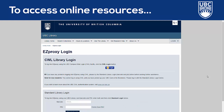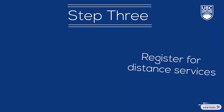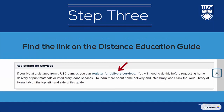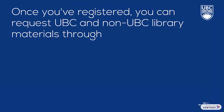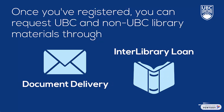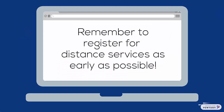Step 3: Register for Distance Services. Registering is as simple as filling out an online form, the link for which is on the Distance Education Guide under 'Getting Started.' Once you've registered for Distance Services, you'll be able to request library materials from both UBC and non-UBC libraries and have them delivered to you using document delivery or interlibrary loan. For more information about how both of these services work, check out our Document Delivery and Interlibrary Loan video. It's important that you register for Distance Services as early as possible, as you can't request any materials for delivery until this online form has been filled out and processed.